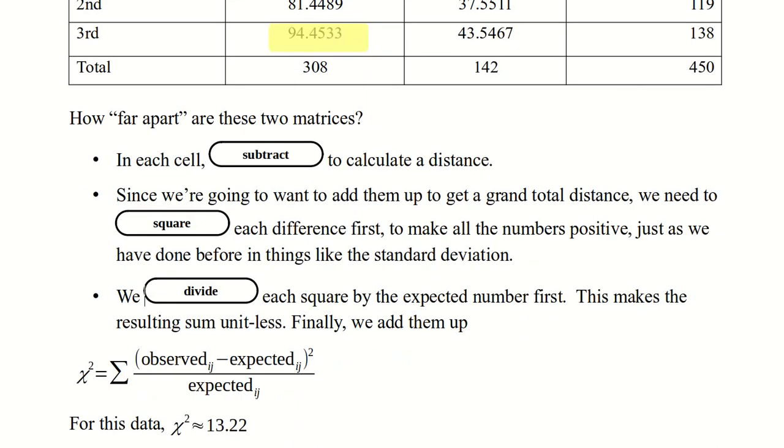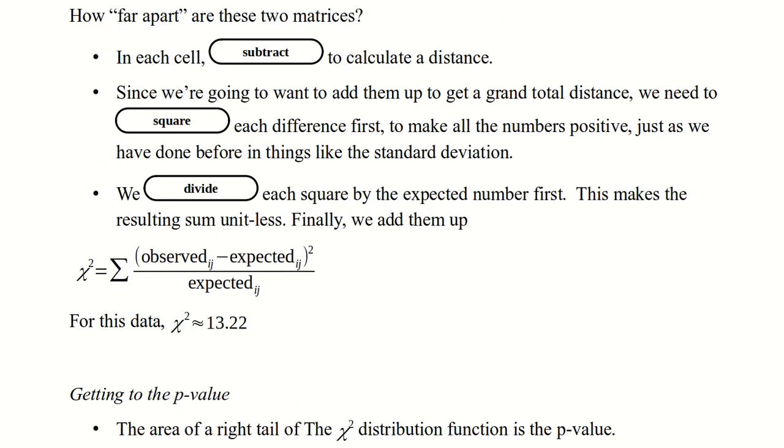When we do that in this example, we see that chi-squared is the sum. So there's sigma. Sigma is telling us to add up. It's telling us to add up that quotient, because we want it to be unitless, of the squares in the numerator, because we want to talk about distances. Distances come from the difference between the observed and the expected. In this data, that gives us a chi-squared of 13.22.